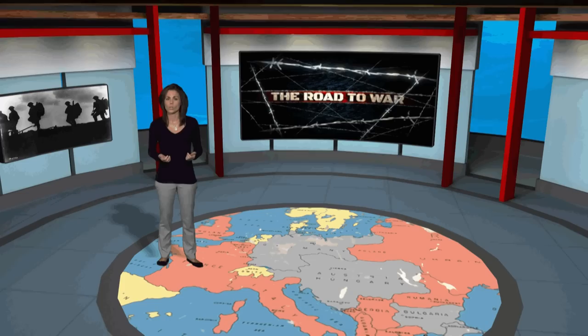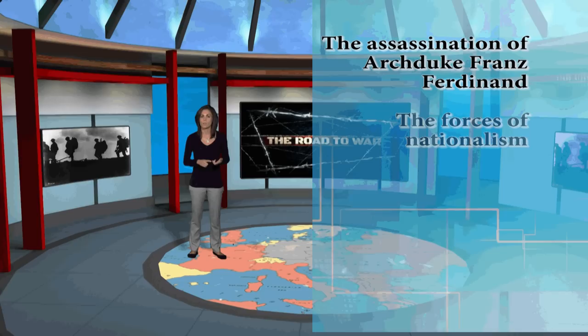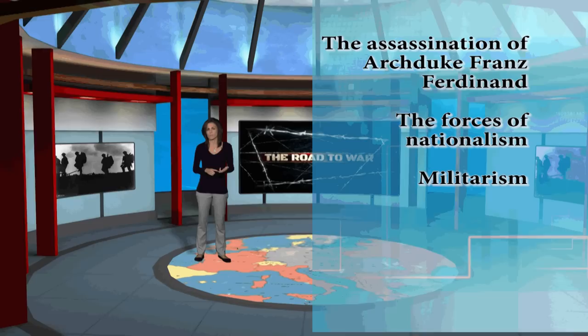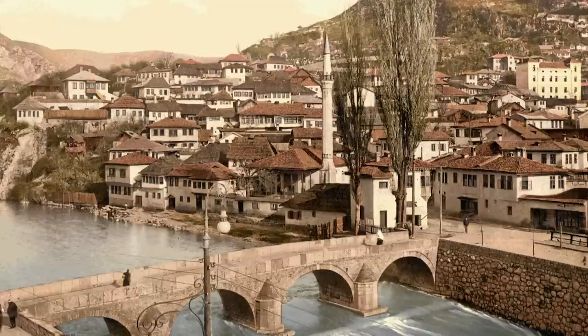So how does this modern, interconnected, civilized world crash into a war that will engulf the globe and consume more than 10 million lives? Historians point to the following causes: the assassination of Archduke Franz Ferdinand, the forces of nationalism and militarism, the alliance system of Europe, and the failure of diplomacy to avert war.